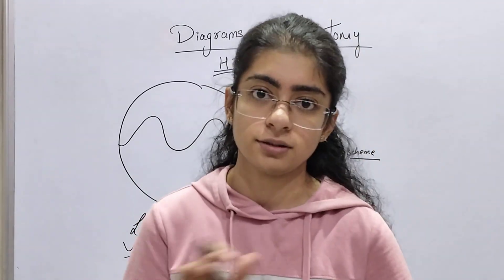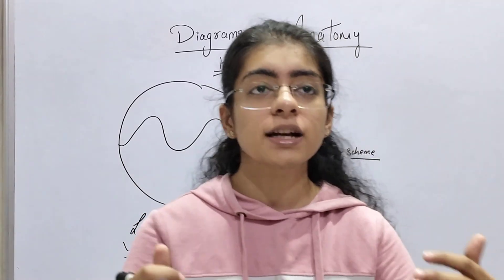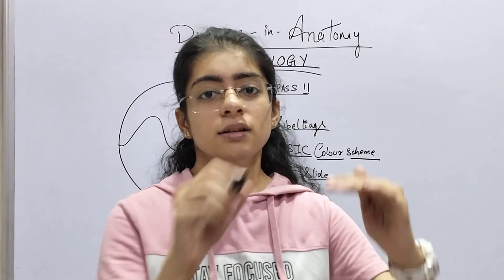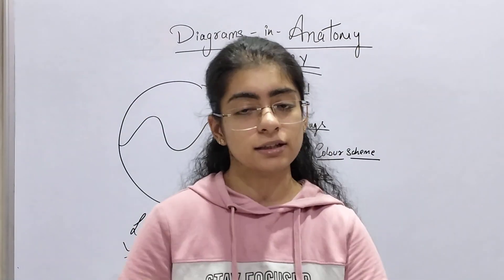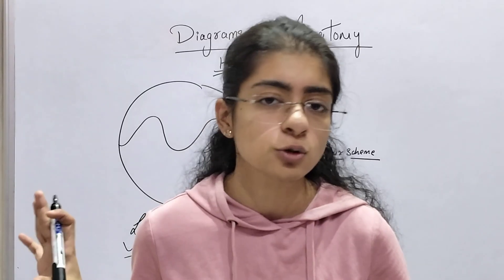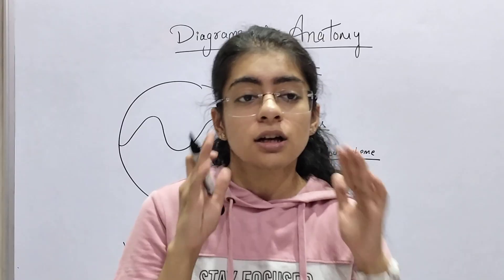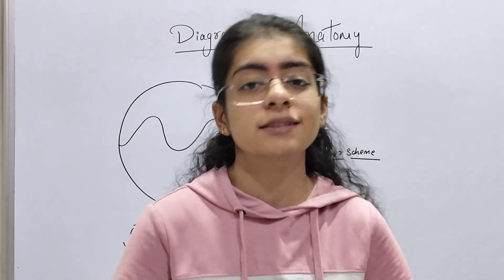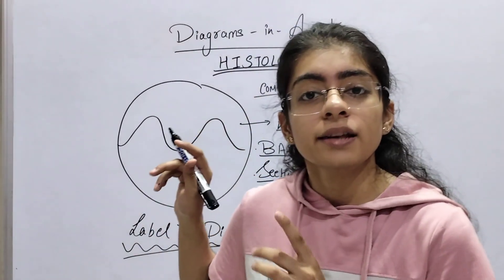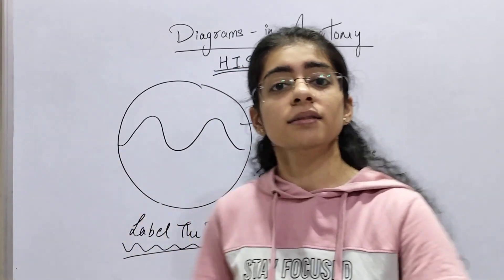To learn histology diagrams, first look at the slide. Understand the layers — for example, epithelium, then connective tissue, and so on. Then try to draw a rough diagram. If you have understood and seen the slide well, you'll get around 70–80% correct. After that, review what could be improved and fix it.